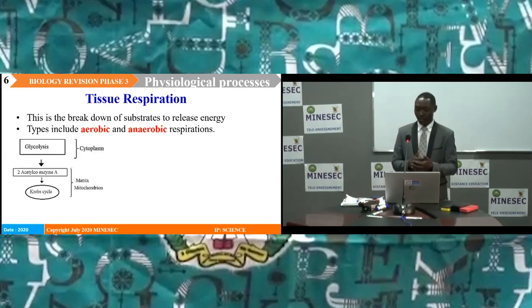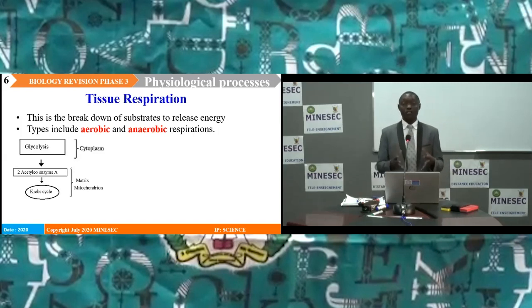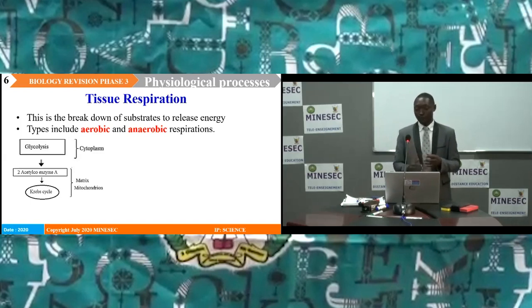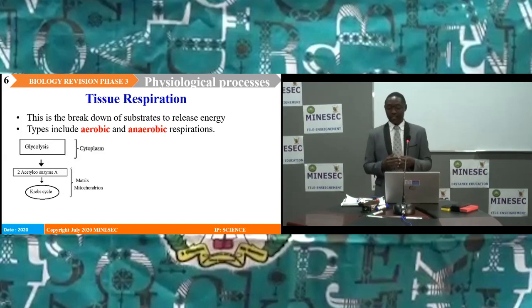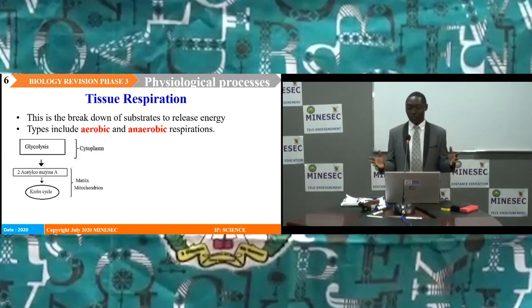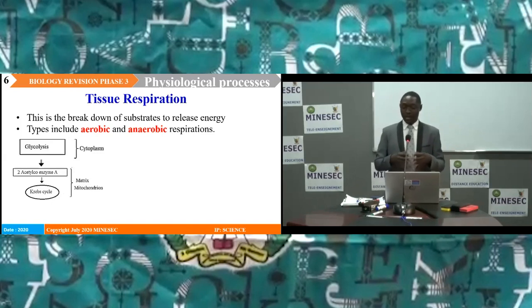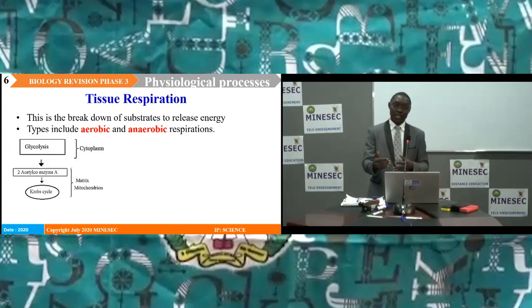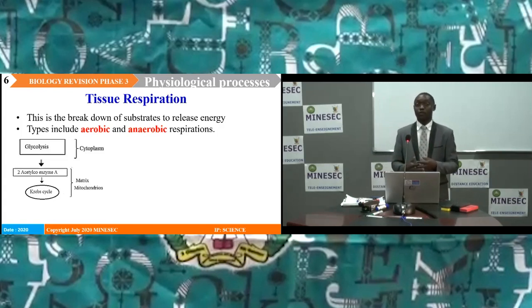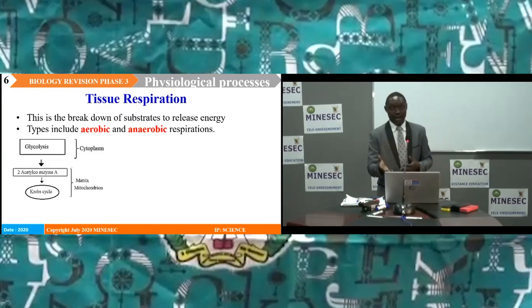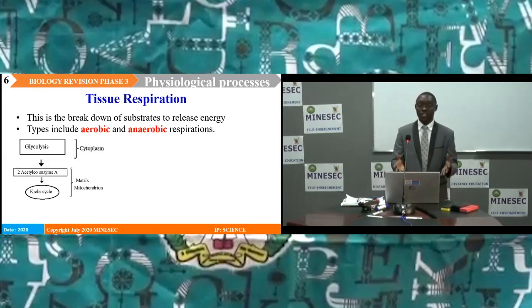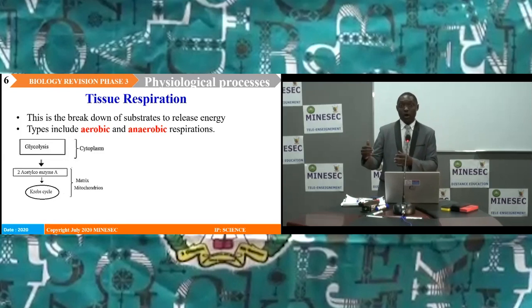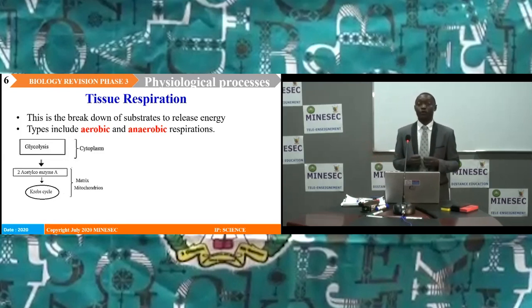During the Krebs cycle, acetyl-coenzyme A combines with oxaloacetic acid, leading to the formation of citric acid. The citric acid is dehydrogenated, passing through intermediary molecules leading to the formation of succinic acid. Carbon dioxide is released and the molecule regenerates oxaloacetic acid. During this process, coenzymes are also reduced, forming reduced NAD and reduced FAD. These molecules enter the respiratory chain in the next phase and provide energy. During the Krebs cycle, ATP molecules are also formed through substrate-level phosphorylation.